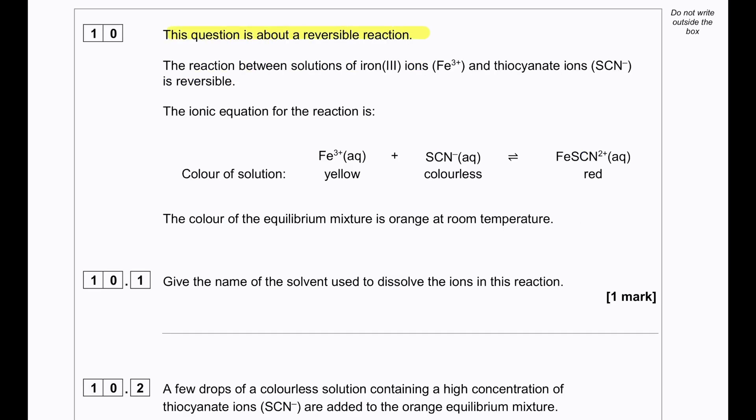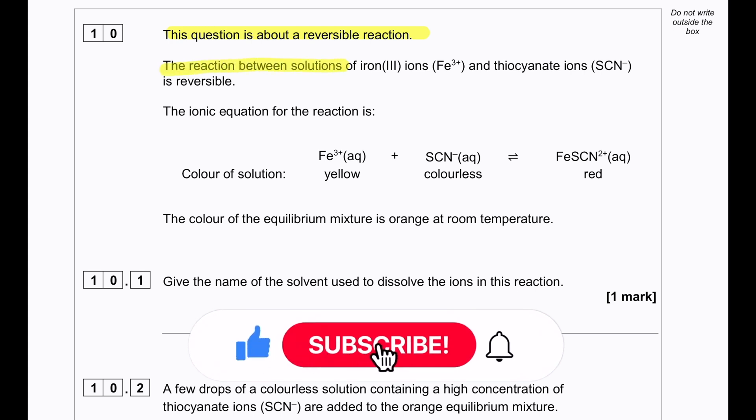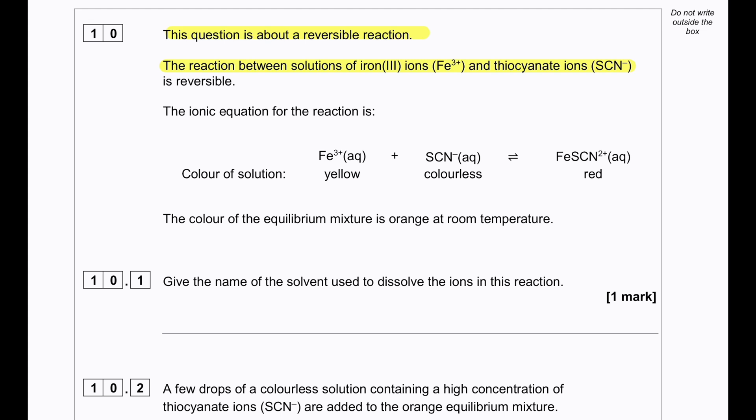This question is about a reversible reaction. The reaction between solutions of iron 3+ and the thiocyanate SCN- is reversible. The ionic equation for the reaction is Fe3+, which is yellow in color, reacts with thiocyanate, which is colorless, and produces a ligand of iron thiocyanate 2+, which has a red color. The color of the equilibrium mixture is orange at room temperature. Give the name of the solvent used to dissolve the ions in this reaction. So we can see aqueous, so we'll see water.